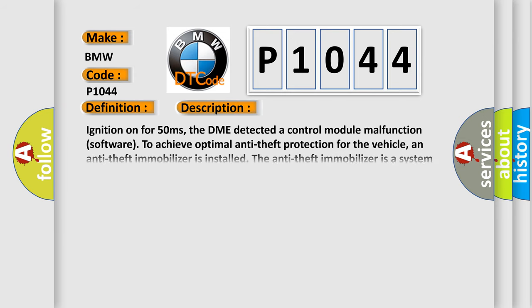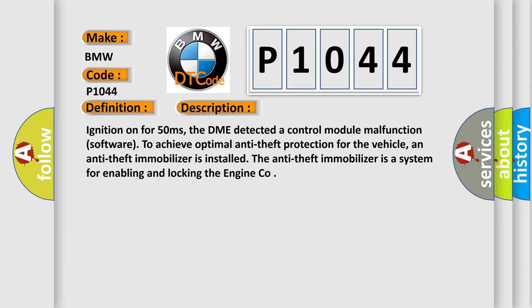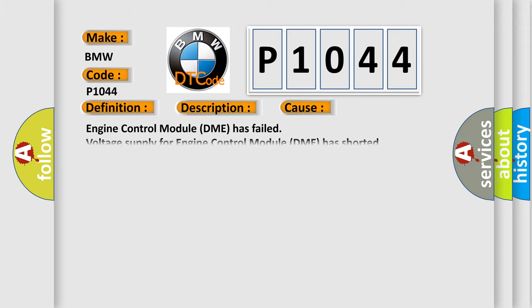And now this is a short description of this DTC code. Ignition on for 50 milliseconds, the DME detected a control module malfunction software. To achieve optimal anti-theft protection for the vehicle, an anti-theft immobilizer is installed. This diagnostic error occurs most often in these cases: engine control module DME has failed, or voltage supply for engine control module DME has shorted.